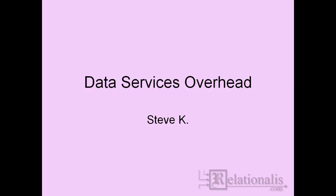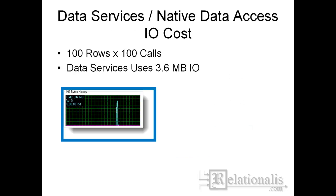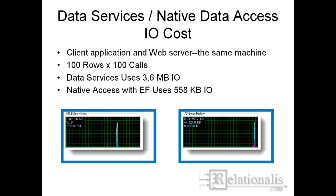We will start out using a Lambda-based query to a WCF data service and measure the network IO that is generated. 100 calls are made to the data service, with each call returning 100 records. Network reads and writes generate 3.6 megabytes of network IO. The same query against the entity framework data model generates only 558 kilobytes of network IO.